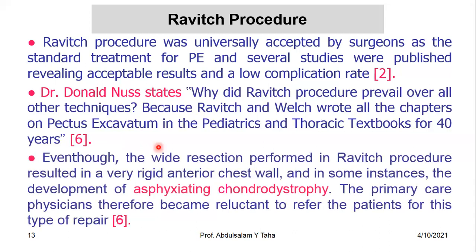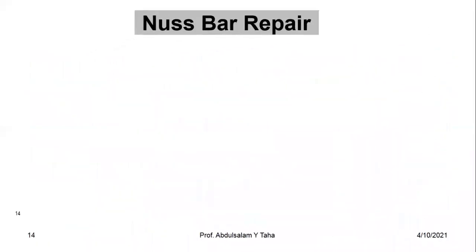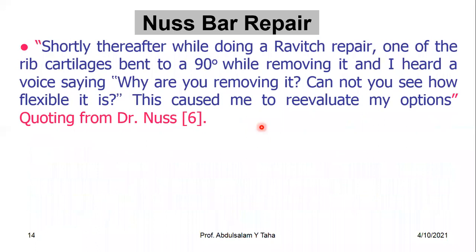Despite the use of the Ravage operation for more than 40 years, the wide resection performed resulted in a very rigid anterior chest wall, and in some cases the development of a complication called asphyxiating chondral dystrophy. Therefore, primary care physicians became reluctant to refer their patients for this type of repair, and it was time to think of a new treatment for pectus excavatum — known as Nuss bar repair.